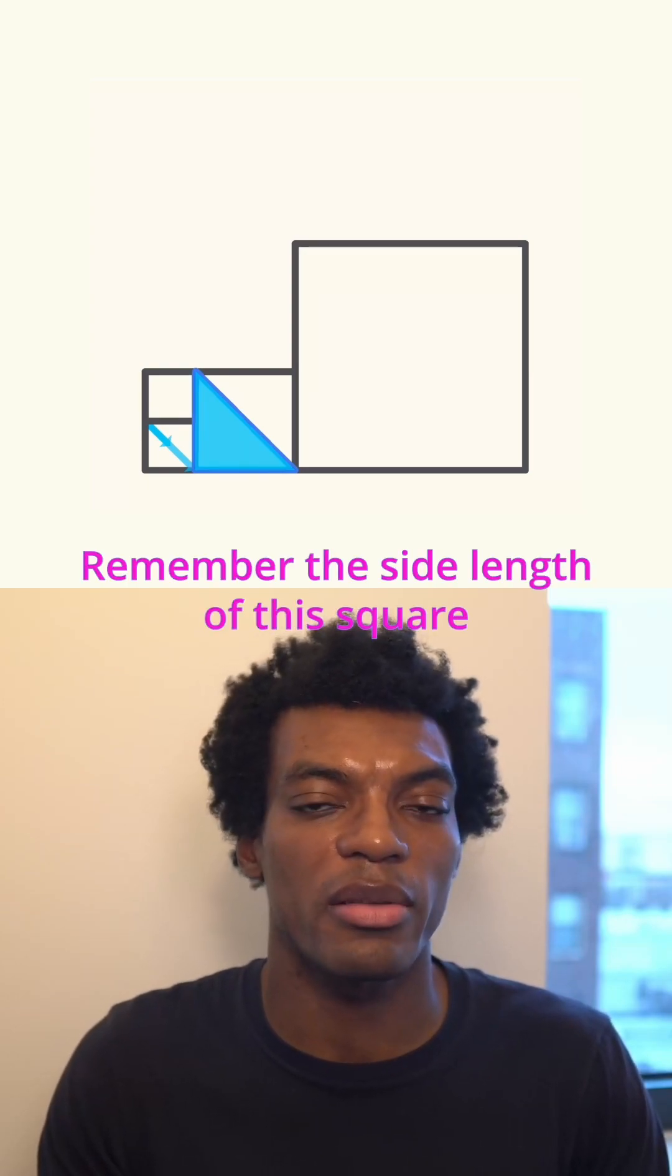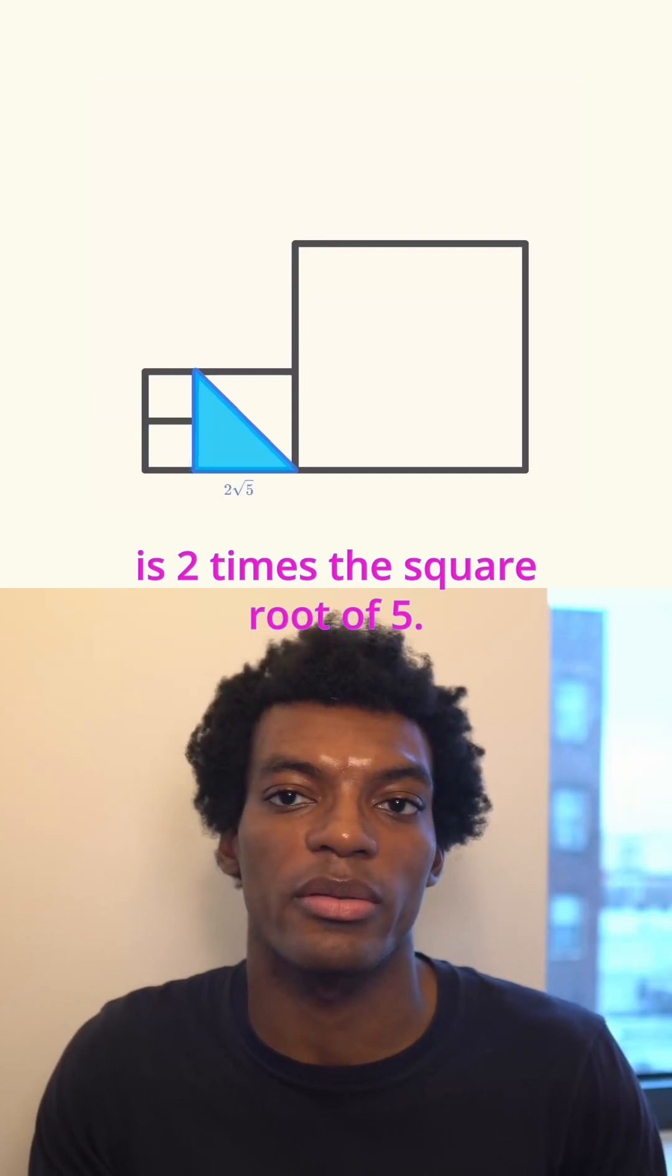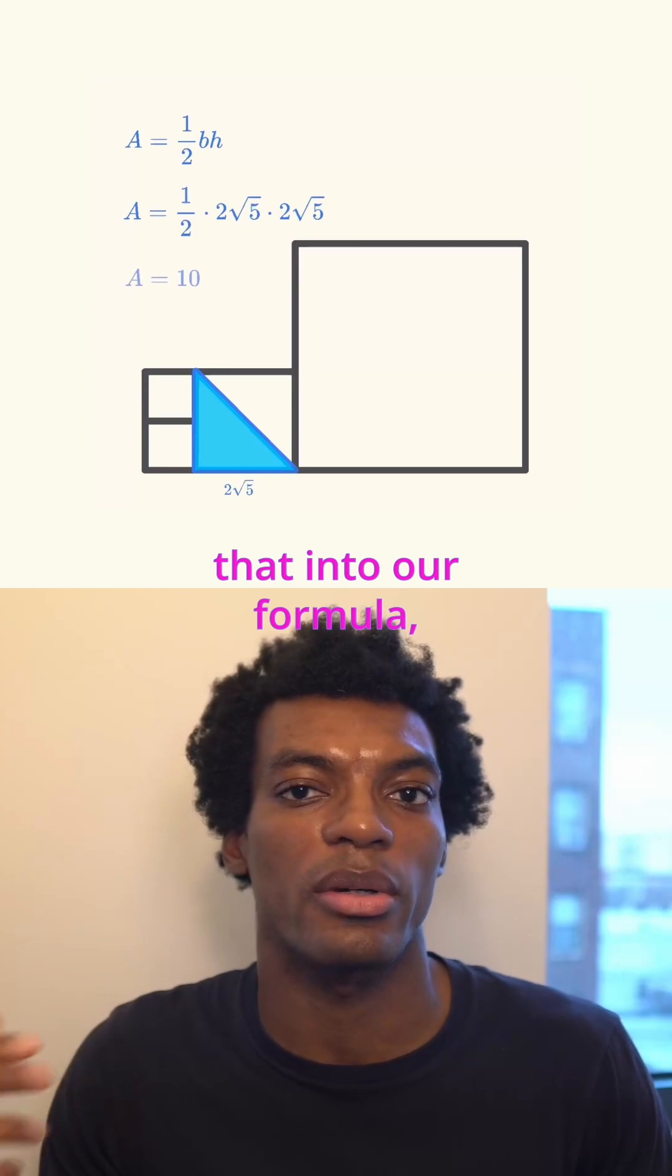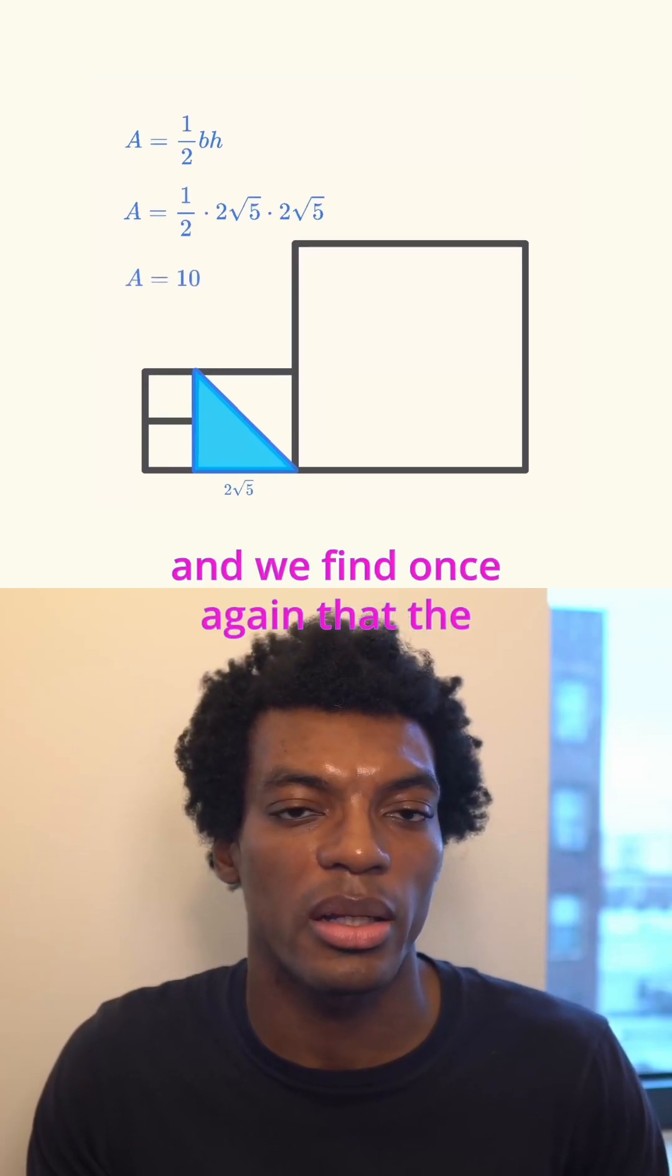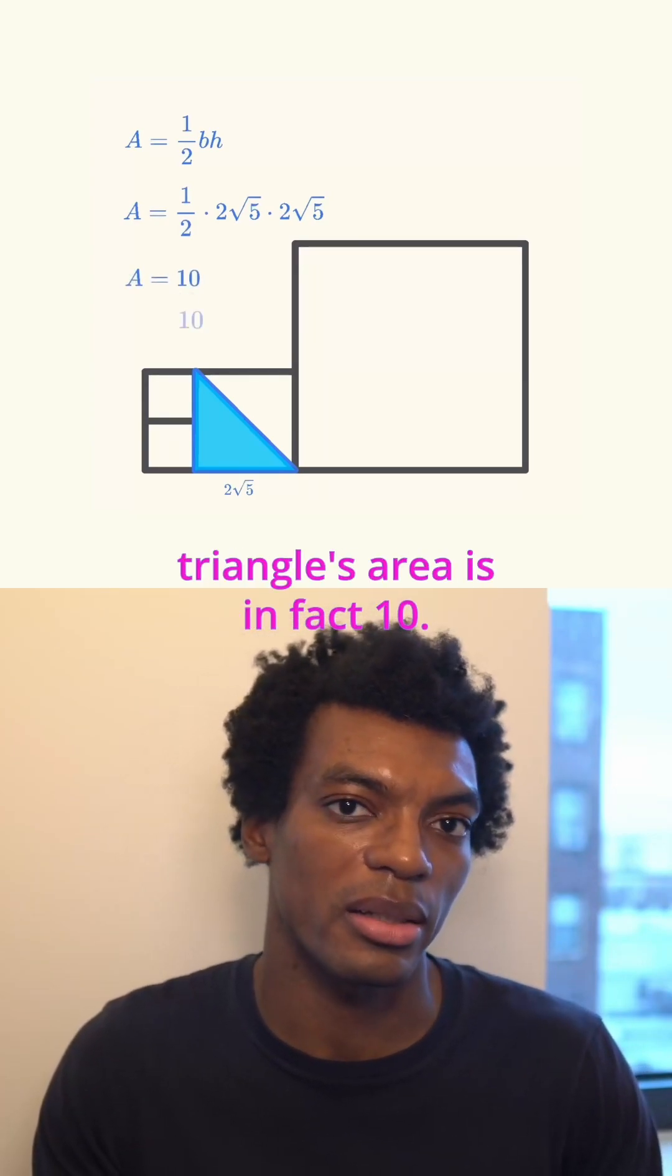Remember the side length of this square is 2 times the square root of 5. Now all we have to do is substitute that into our formula, and we find once again that the triangle's area is in fact 10.